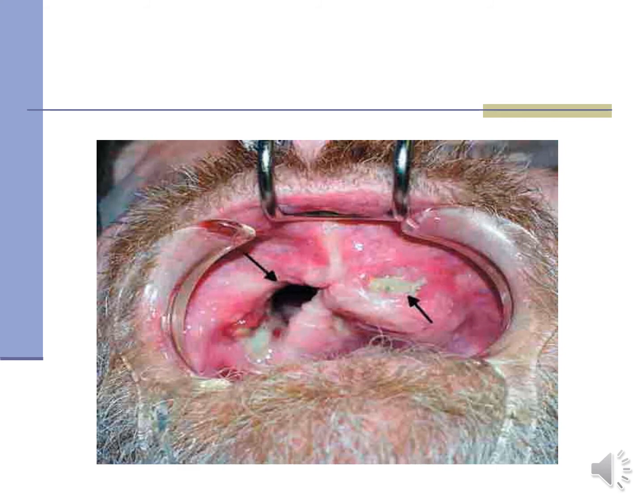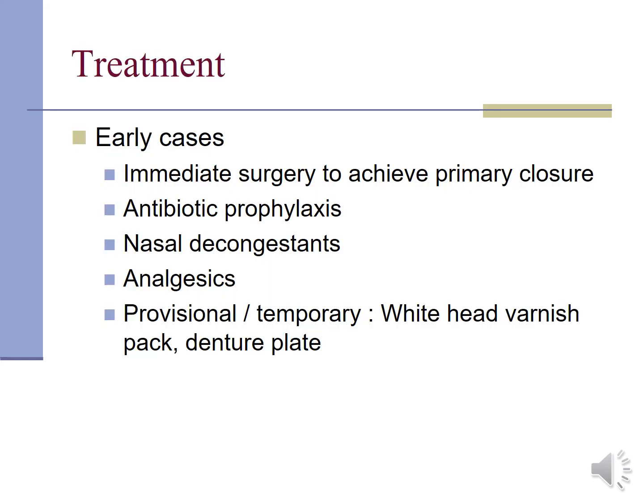This is a picture showing an oral antral communication. Treatment is classified as early and late. In early cases, immediate surgery achieves primary closure when there is no displacement of root into the antrum. Once communication is noticed, antibiotic prophylaxis is started and an antral regime is initiated — nasal decongestant, antibiotic, analgesics. Alternatively, a provisional or temporary whitehead varnish pack on top of a denture plate can be placed to cover the fistula.